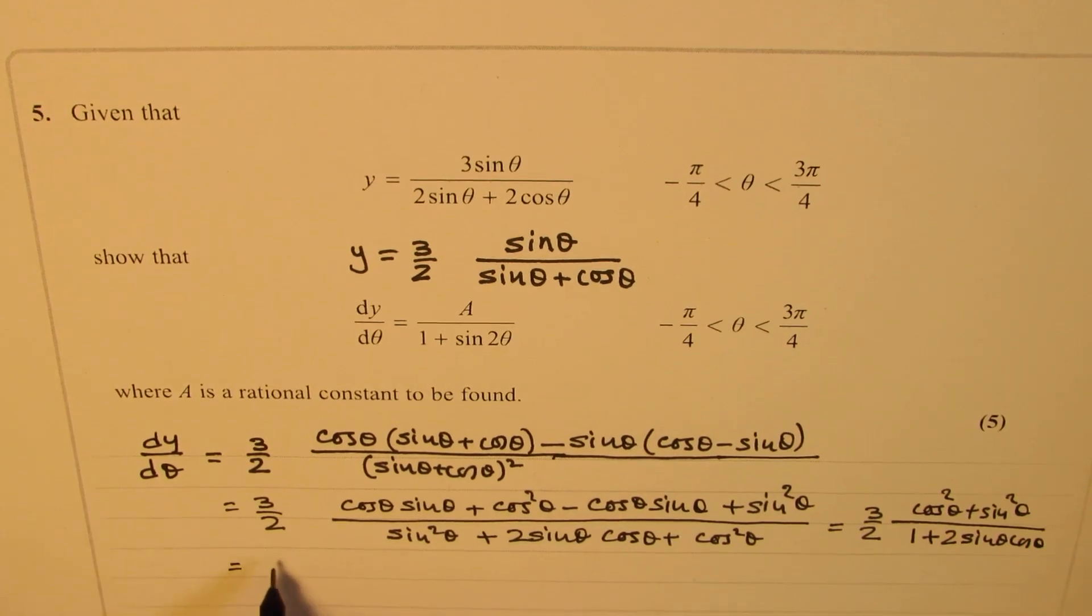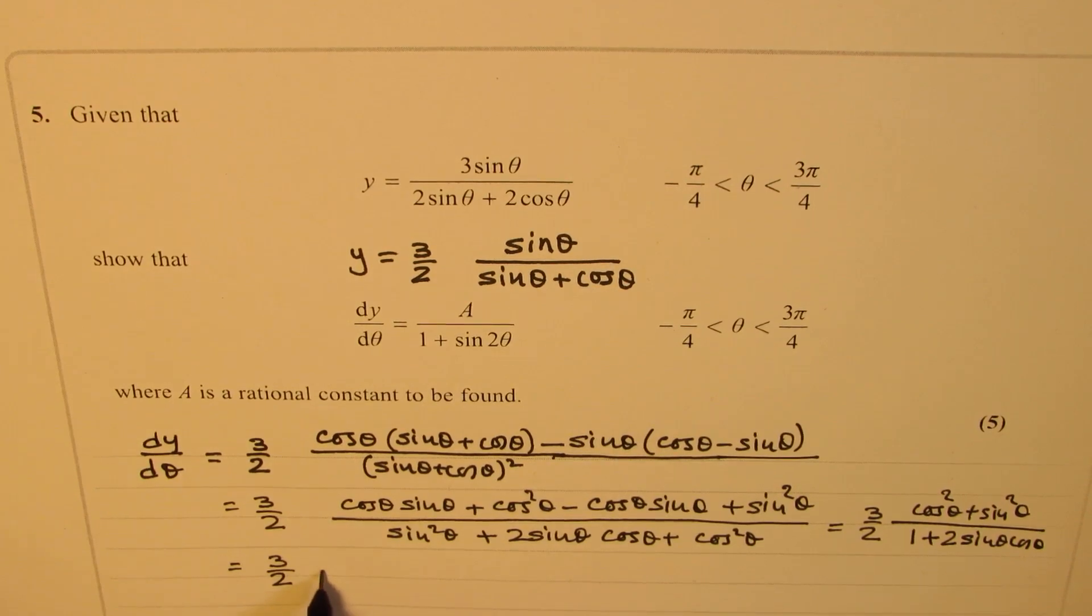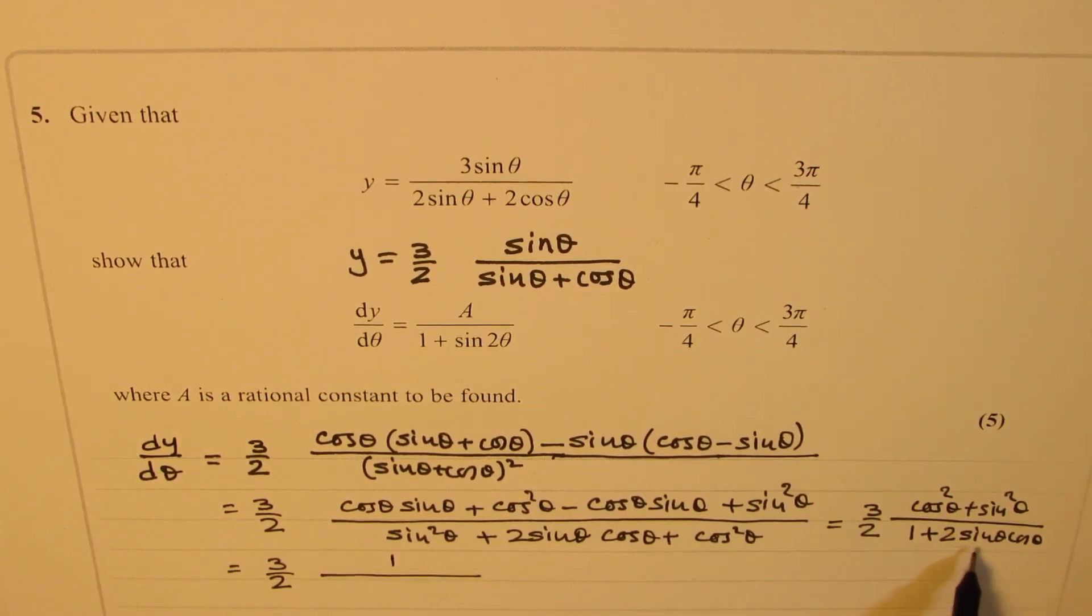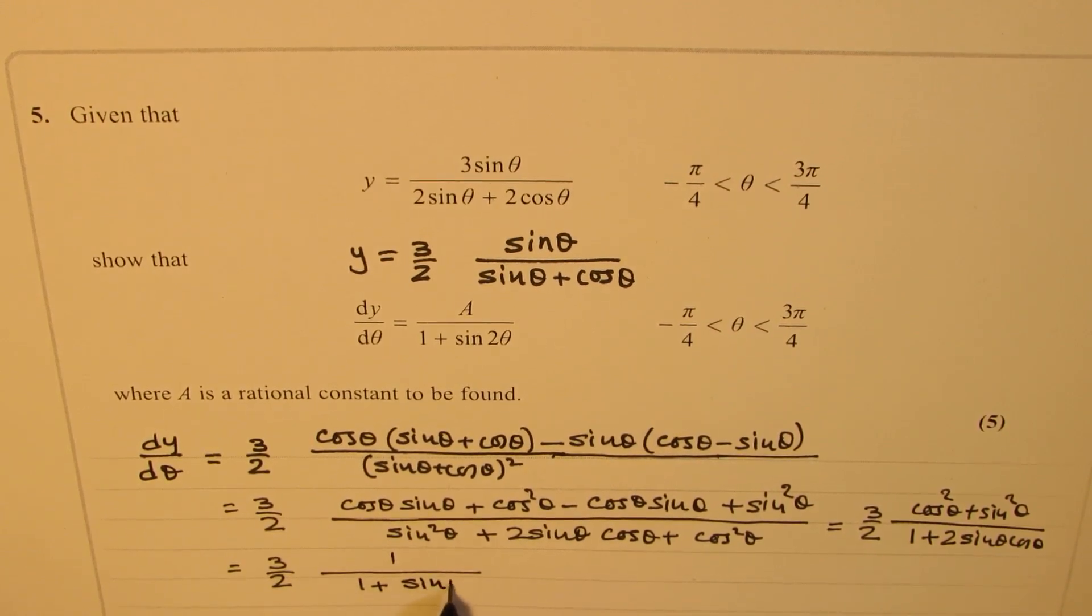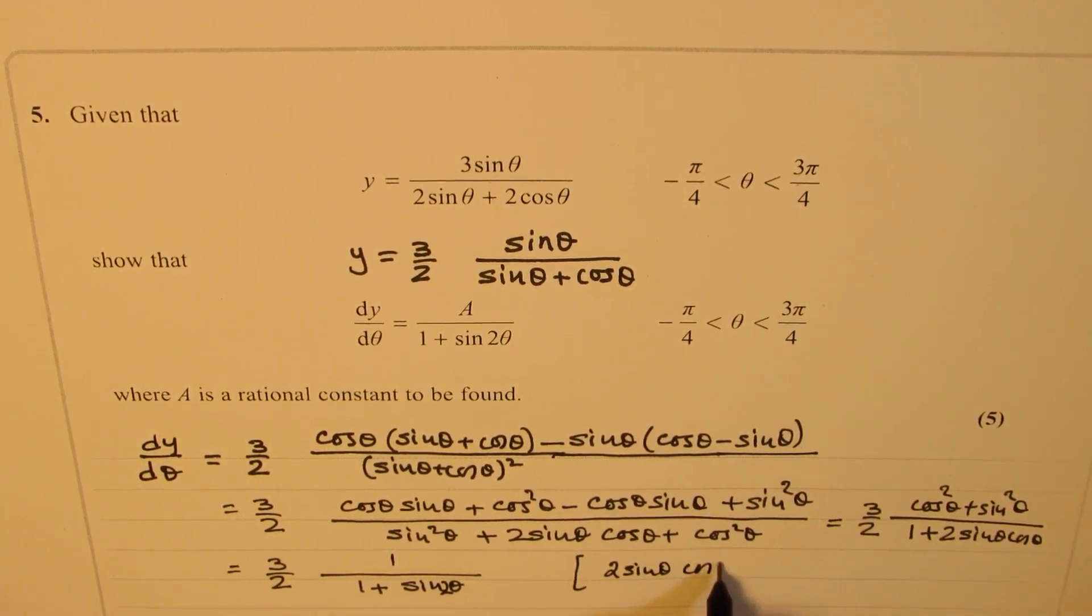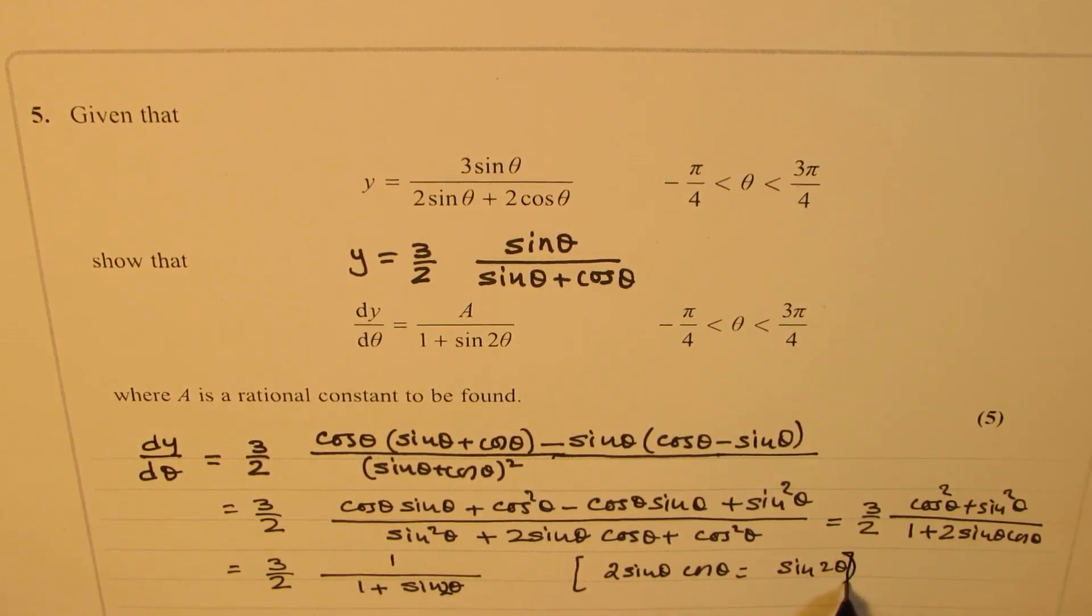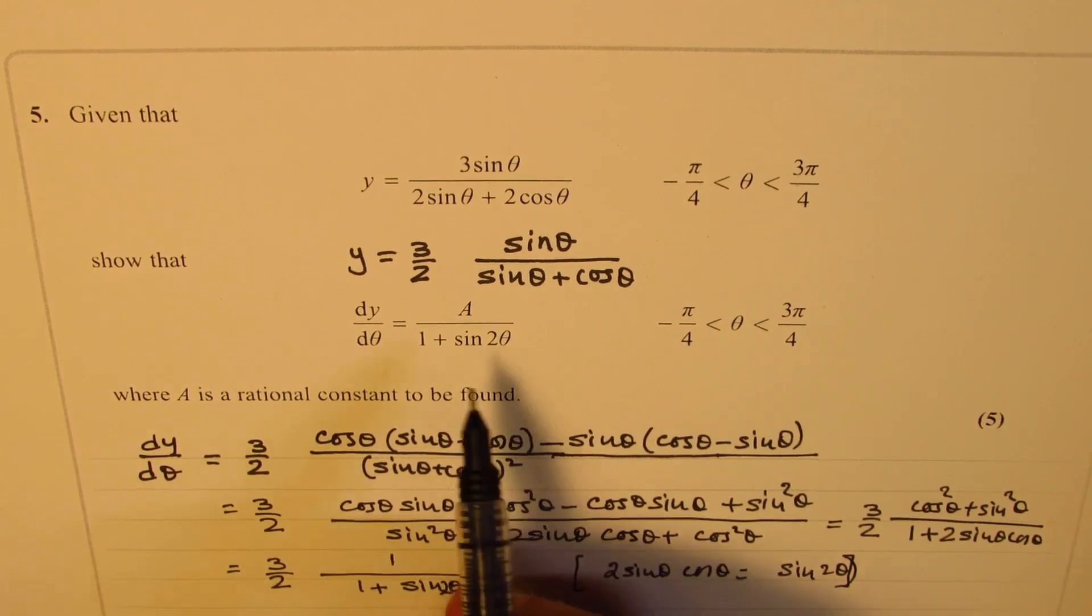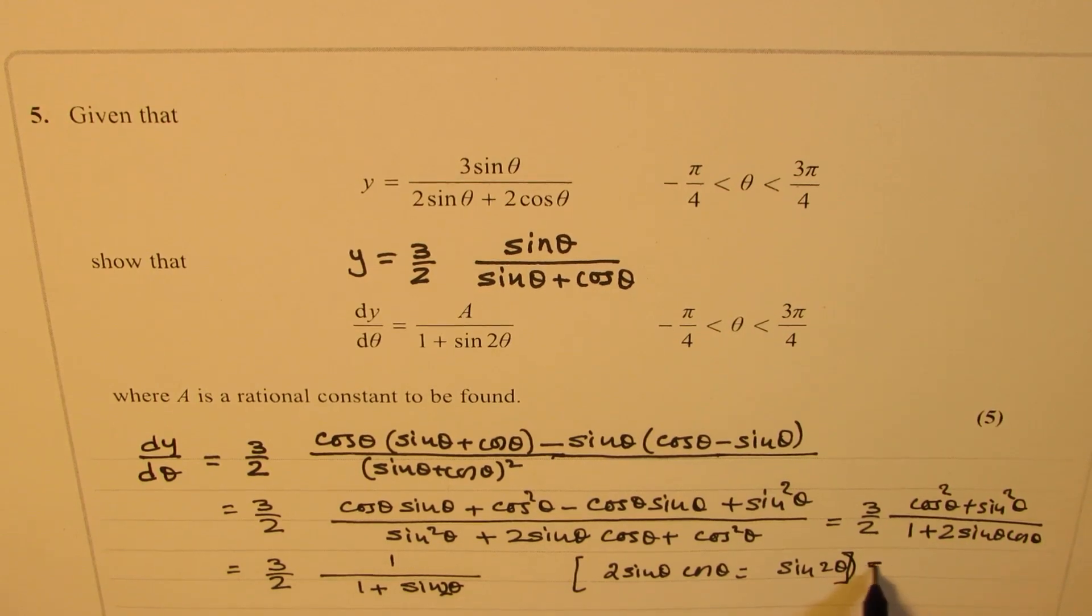Now, we could write this as 3 over 2. And as you know, cos square theta plus sine square theta is 1 over 1 plus 2 sine theta cos theta can be written as 1 plus sine 2 theta. Since we know that 2 sine theta cos theta is equal to sine 2 theta. Now, clearly, when you compare this, you get a as 3 over 2. So that implies that a equals to 3 over 2.